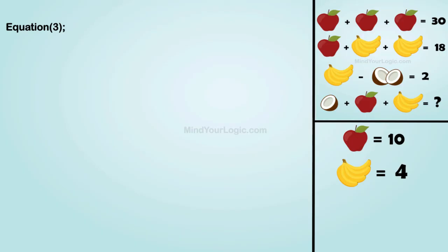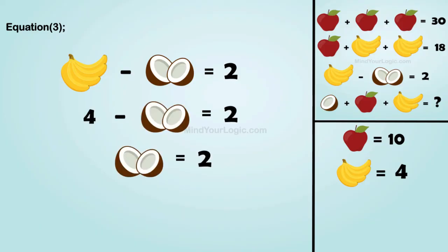Moving forward for equation 3: banana minus coconut equals 2. Substituting the value of banana, we get coconut equals 2.